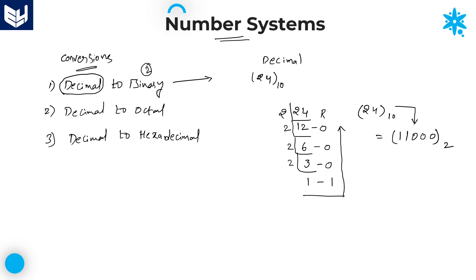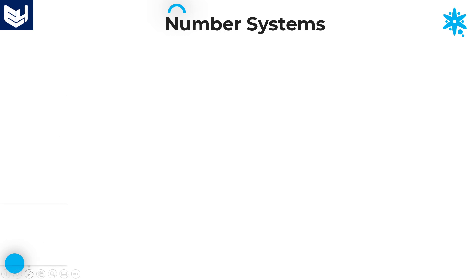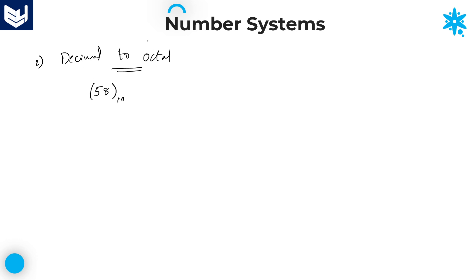The first conversion is complete. Now the second one: decimal to octal. To convert any decimal number into octal — octal has 8 digits — you must divide that decimal number by 8 successively. Let us take the example 158 base 10.